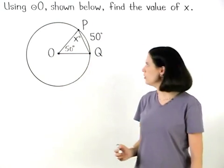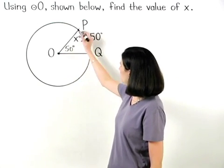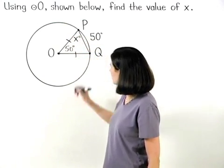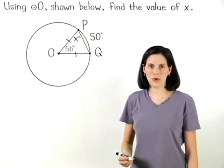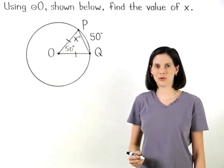Next, notice that sides OP and OQ of triangle OPQ are congruent, because each represents a radius of circle O, and all radii of a given circle are congruent.